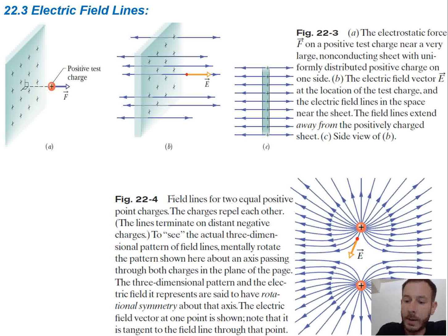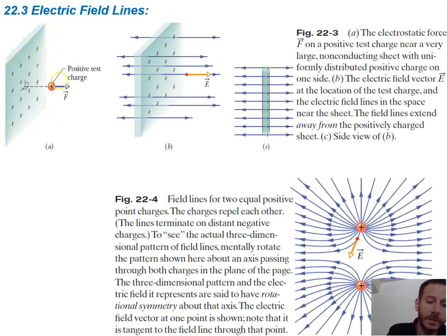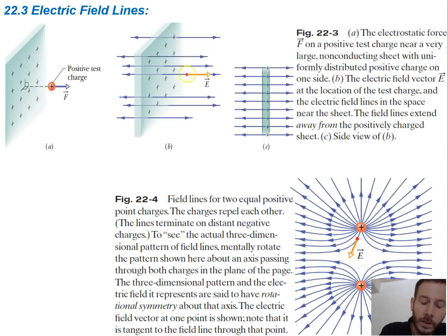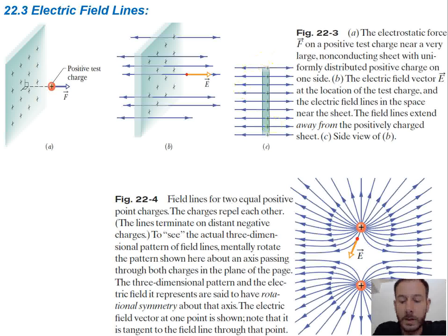The top picture here is showing the electrostatic force F on a positive test charge near a very large non-conducting sheet with uniformly distributed positive charge on one side. Non-conducting means it's an insulator. The direction of the electric field is going to be to the right, because we always use a positive test charge to figure out the direction. Looking at figure C, the electric field lines are going to be going straight away from the sheet on both sides.